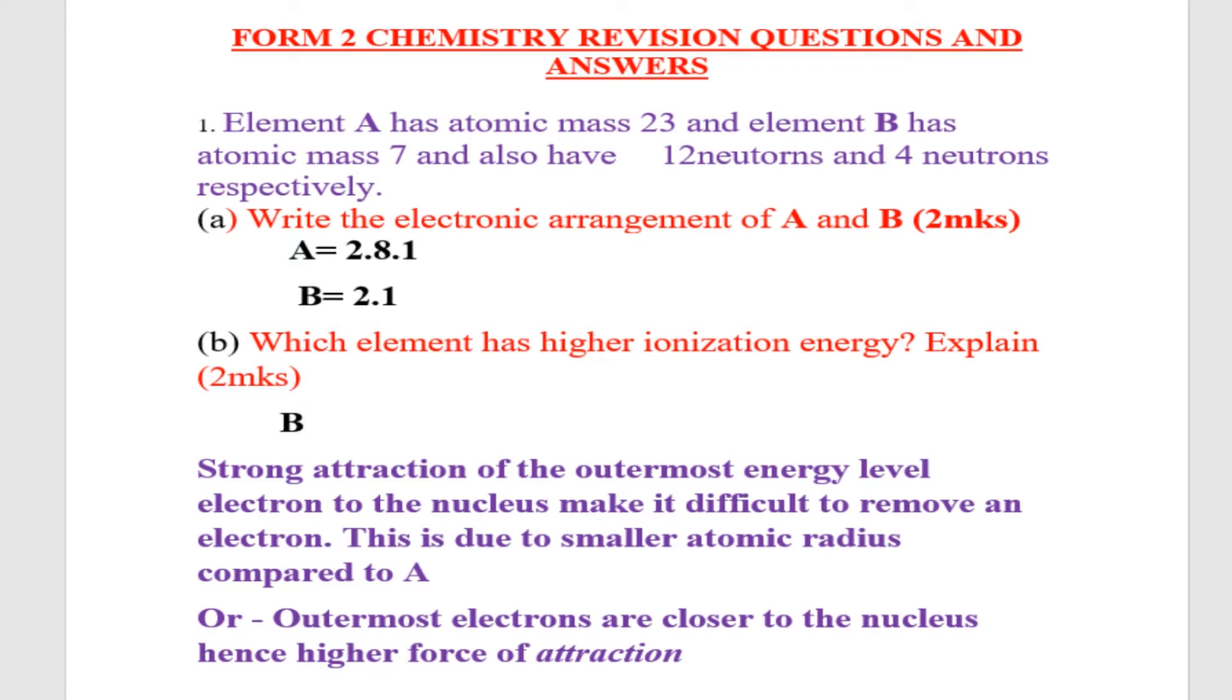The answer is element B. B has strong attraction of the outermost energy level electron to the nucleus, making it difficult to remove that electron because the attraction is higher.